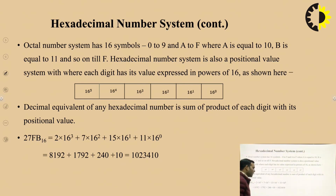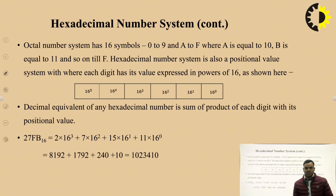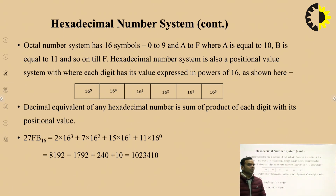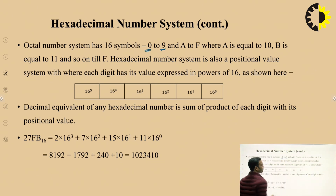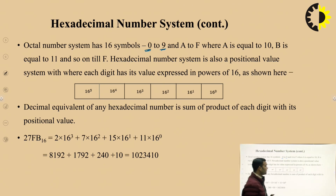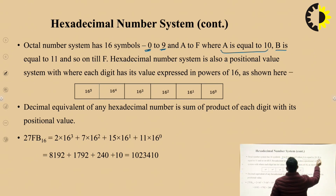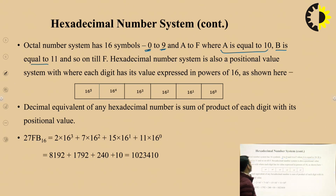The next number system is the hexadecimal number system. As its name suggests, it has 16 digits: 0 through 9, and then A, B, C, D, E, F. Remember that A equals 10, B equals 11, C equals 12, D equals 13, E equals 14, and F equals 15.